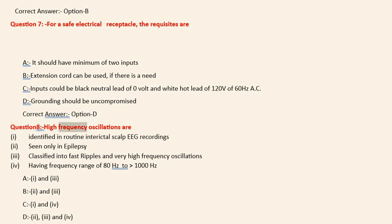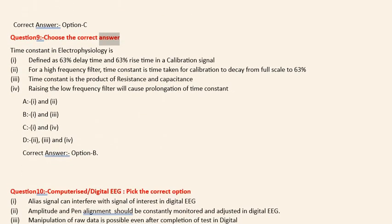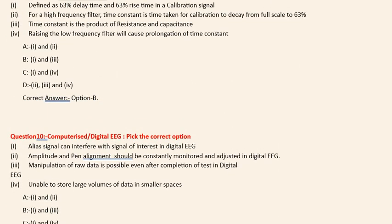Question 8: High frequency oscillations are: (i) Identified in routine interictal scalp EEG recordings. (ii) Seen only in epilepsy. (iii) Classified into fast ripples and very high frequency oscillations. (iv) Having frequency range of 80 Hz to 1000 Hz. Options: A. i and iii, B. ii and iii, C. i and iv, D. ii and iv. Correct answer: Option C.